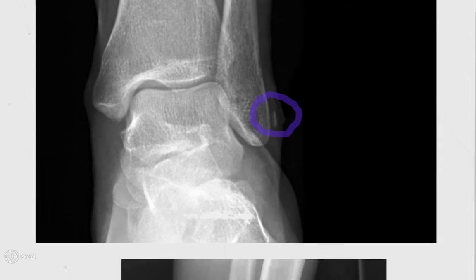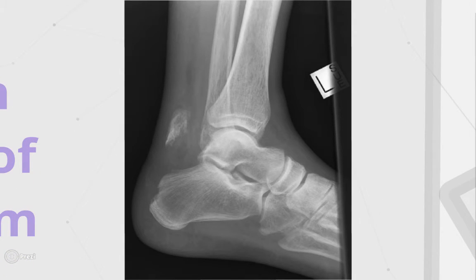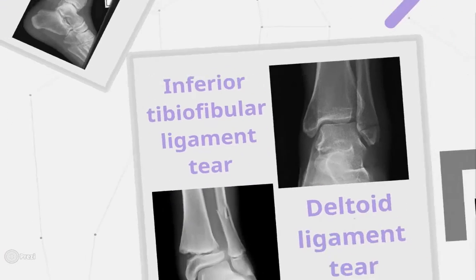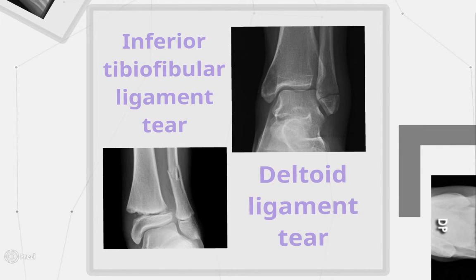Avulsion fractures of the calcaneal tuberosity result from pulling of the Achilles tendon, which can occur in forced dorsiflexion of the foot during a fall as the gastrocnemius and soleus muscles contract. Inferior tibiofibular ligament tears may occur with malleolar fractures and are a result of twisting injuries; x-rays may show separation of the tibiofibular joint and fractures of the distal tibia and fibula. Eversion or pronation injuries of the foot can cause deltoid ligament tears, which are associated with fractures of the distal fibula — x-rays reveal a widened medial joint space and a separated tibiofibular joint.